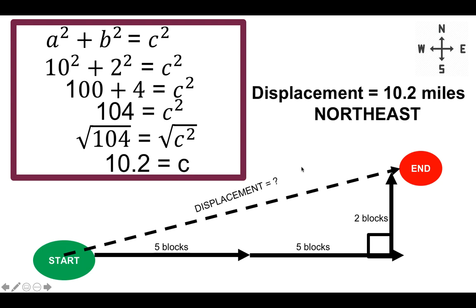Our displacement is 10.2 miles, because that was the side of the triangle we called c, and the direction is northeast because the arrow pointing towards the end point is between north and east. So 10.2 miles northeast. You have about two problems like this on your quiz — if you get stuck, go back and watch this problem, slow it down, and if you still have questions contact me and we'll video conference.